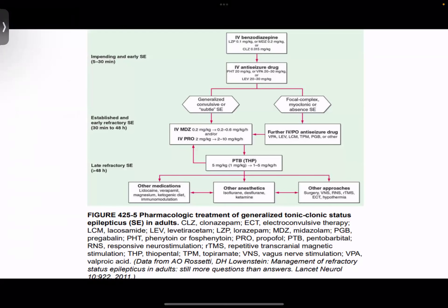Coming to the approach to generalized tonic-clonic status epilepticus in adults: first line is IV benzodiazepines. We can try midazolam at a dose of 0.2 mg per kg, lorazepam at 0.1 mg per kg, or clonazepam at 0.015 mg per kg. If required, the IV benzodiazepines can be repeated after 5 minutes.